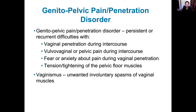Vaginismus is basically unwanted or involuntary spasms of the vaginal wall muscles, which causes pain for the woman and difficulty with penetration during the sex act between a woman and a man.